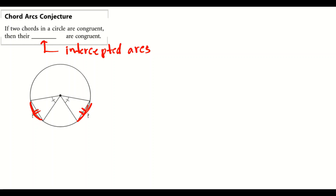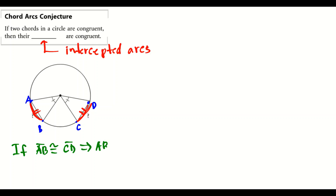Let's clarify this with labels. Call the points A, B, C, and D. The conjecture tells us that if chord AB is congruent to chord CD, then arc AB is also congruent to arc CD.